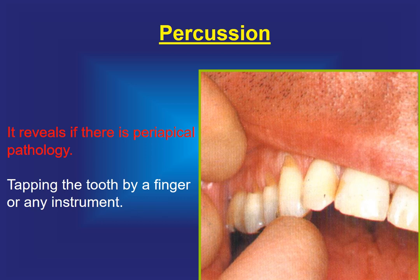Percussion reveals if there is any periapical pathology. This is done by tapping the tooth with our finger or any instrument. If we get a positive response, that means we have periapical pathology.